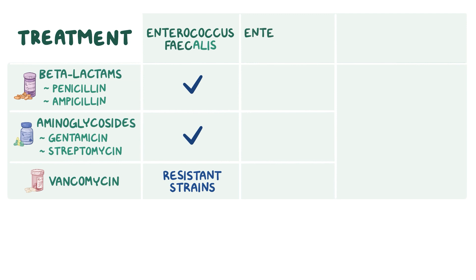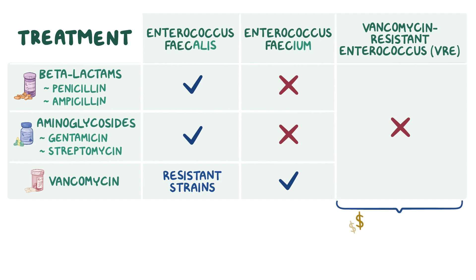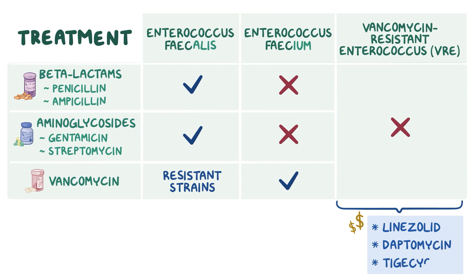Most strains of Enterococcus faecium are highly resistant to beta-lactams and aminoglycosides, so vancomycin is used from the get-go. Sadly, both Enterococcus faecalis and Enterococcus faecium can become resistant even to vancomycin. These are called vancomycin-resistant Enterococcus, or VRE, and require treatment with expensive antibiotics like linezolid, daptomycin, or tigecycline.